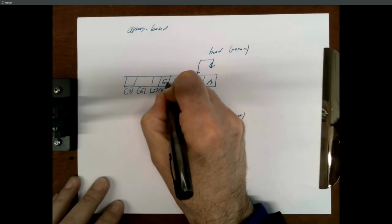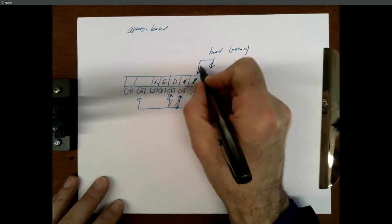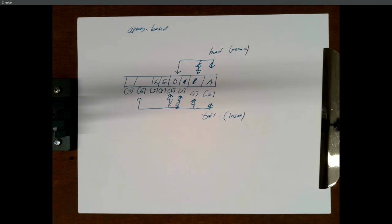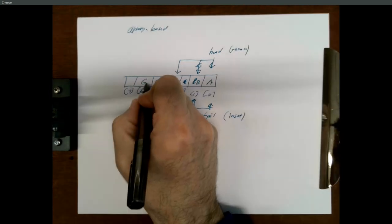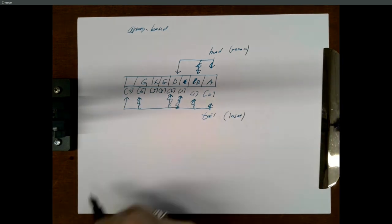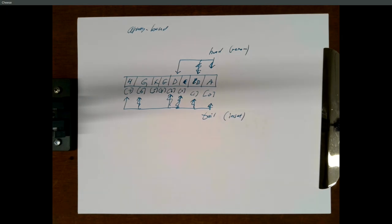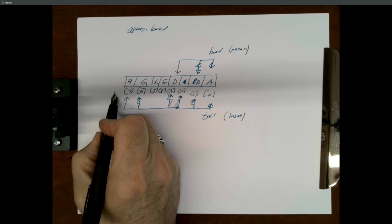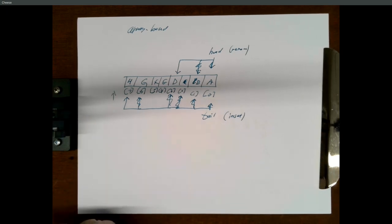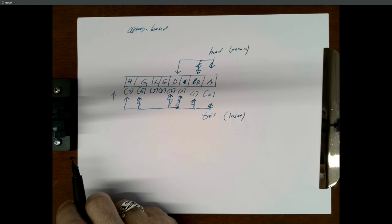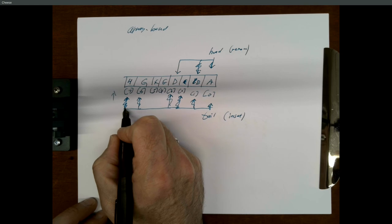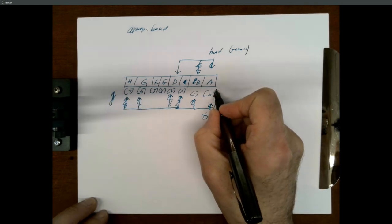Let's insert D, E, and F — tail is pointing here. Remove B and C — head is pointing here. Now the queue has D, E, and F. Insert G, push the tail down. Insert one more thing, H. If we increment the tail once more, it's going to point to something outside the array. Is our queue full? We've only got D, E, F, G, and H — five things — but our array holds eight. It would be a shame to say it was full.